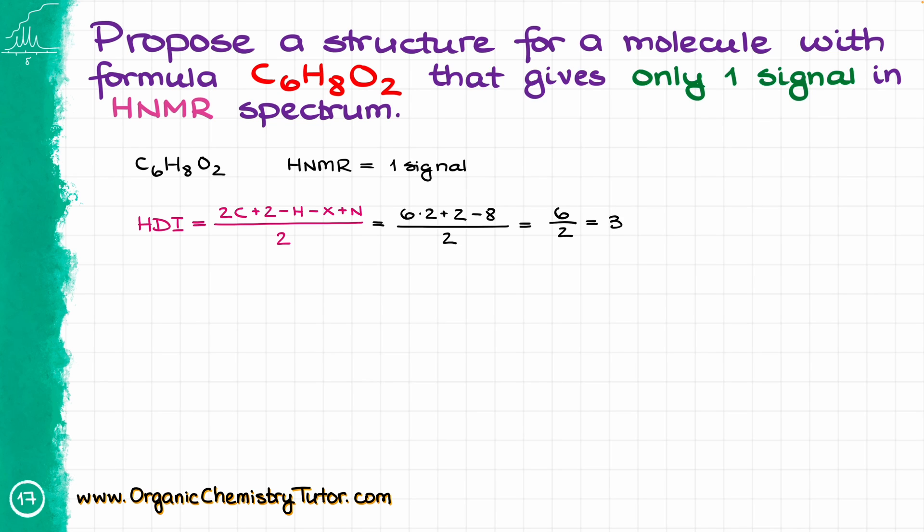So what does that mean? Three degrees means that we can have any combinations of pi bonds and cycles that will amount to three. In other words, that means I can have three pi bonds, a cycle and two pi bonds, two cycles and a pi bond, or three cycles in my molecule. That gives me a huge number of variations of how the molecule might look like, so I'm definitely not going to be brute forcing that. I will try to see what else I can fish out from the data that I have at hand.